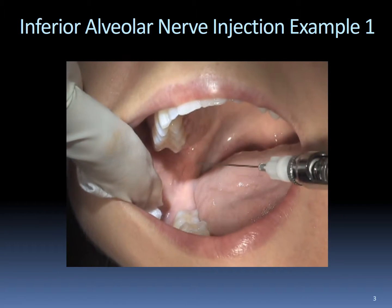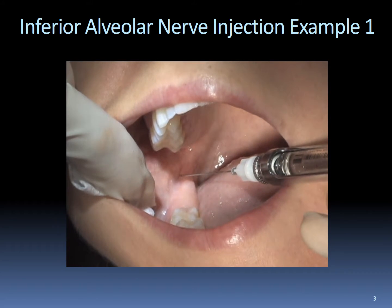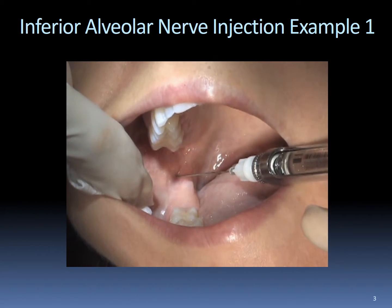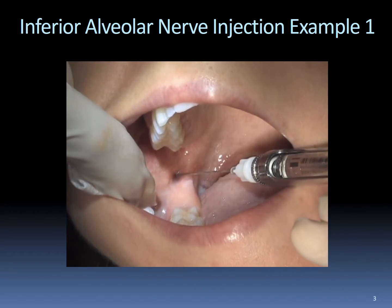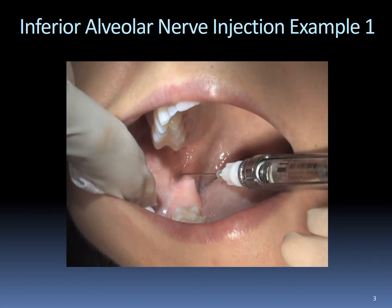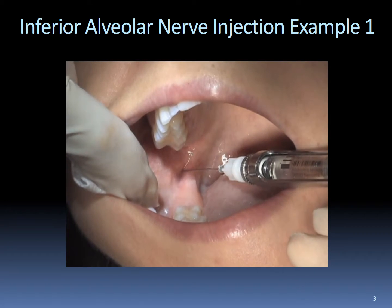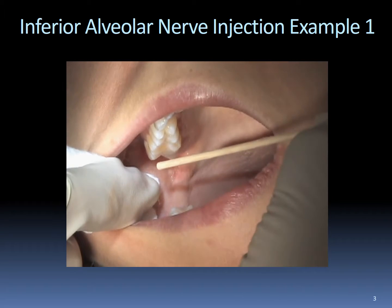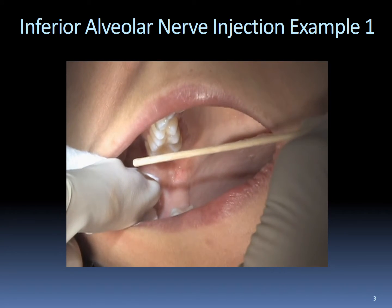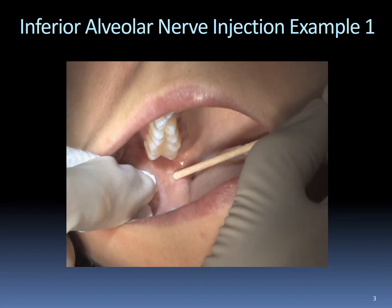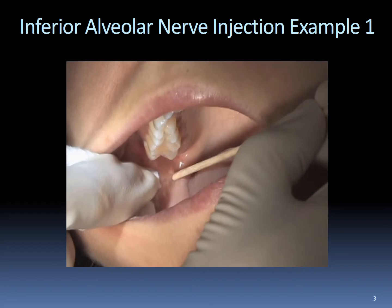The penetration site for this injection is medial to the internal oblique ridge, lateral to the pterygomandibular raphe, at the height of the coronoid notch — approximately two to three millimeters superior to the greatest concavity of the coronoid notch, or approximately 10 millimeters above the occlusal plane. Another good landmark: if you have your finger in the depth of the coronoid notch, look at the top of your finger — the insertion site is approximately adjacent to the top of that finger.